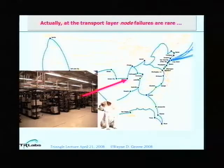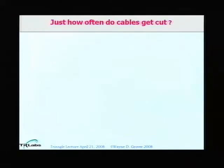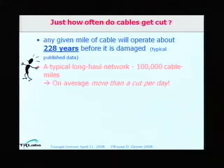The nodal equipment is well housed, manned, protected with fire extinguishers and redundancy, so we don't often see nodal failure. What's really subject to the real world is the outside plant — the actual fiber optics in cables. Any one mile of fiber optic cable may be cut every 228 years. But a typical long-haul network has 100,000 route kilometers of fiber — implying about a cut a day. It's because of survivability mechanisms that we don't see headlines every day.